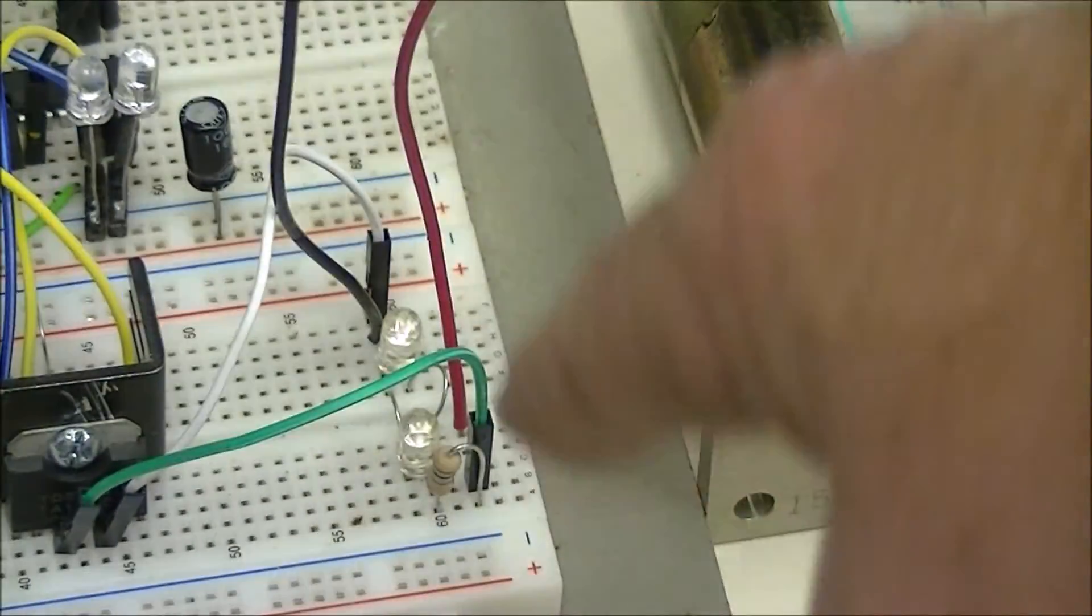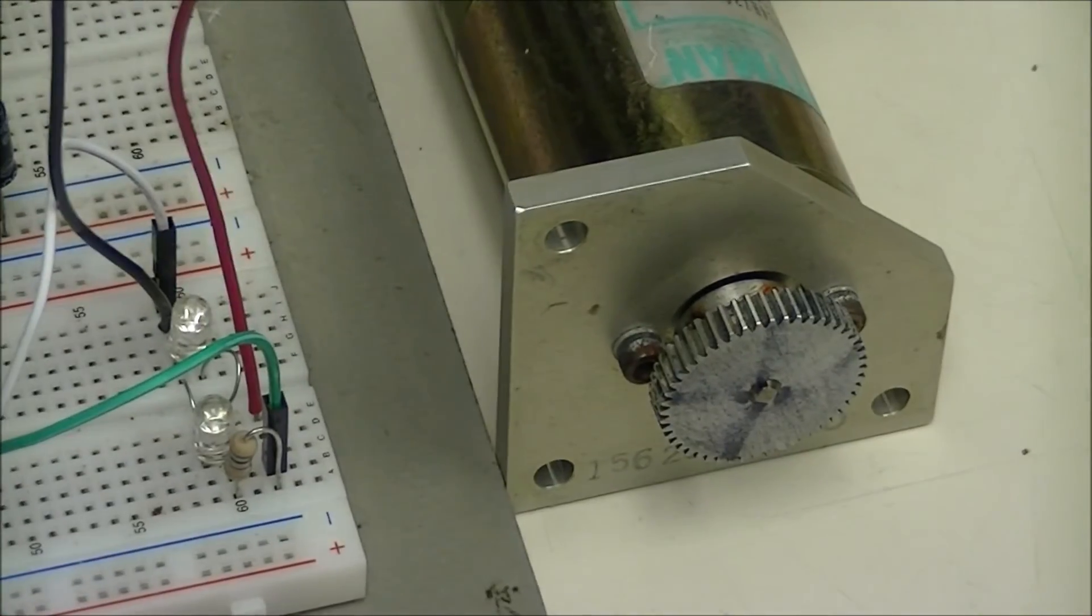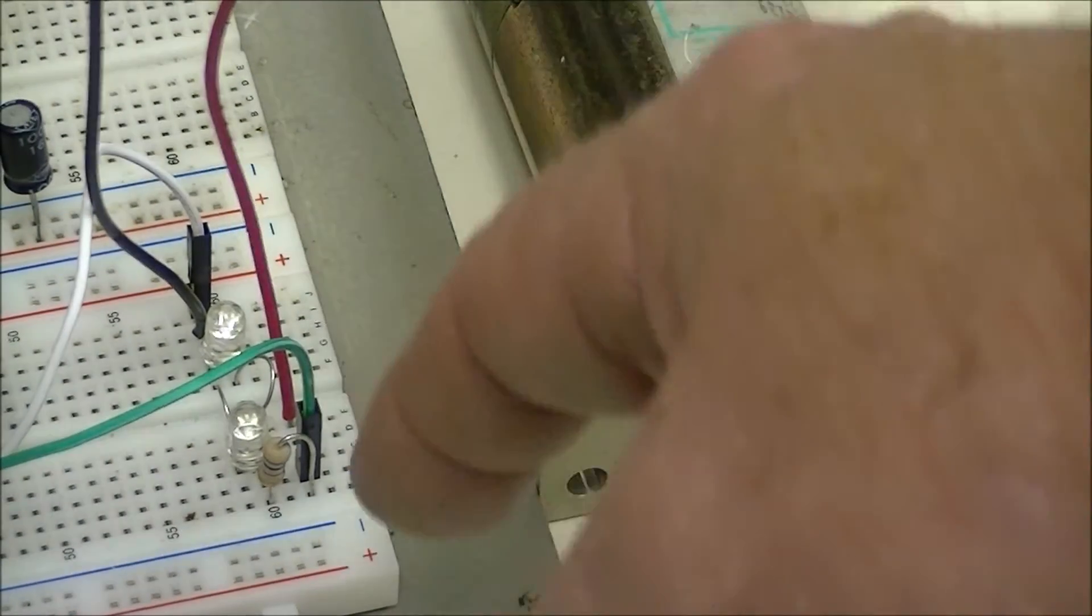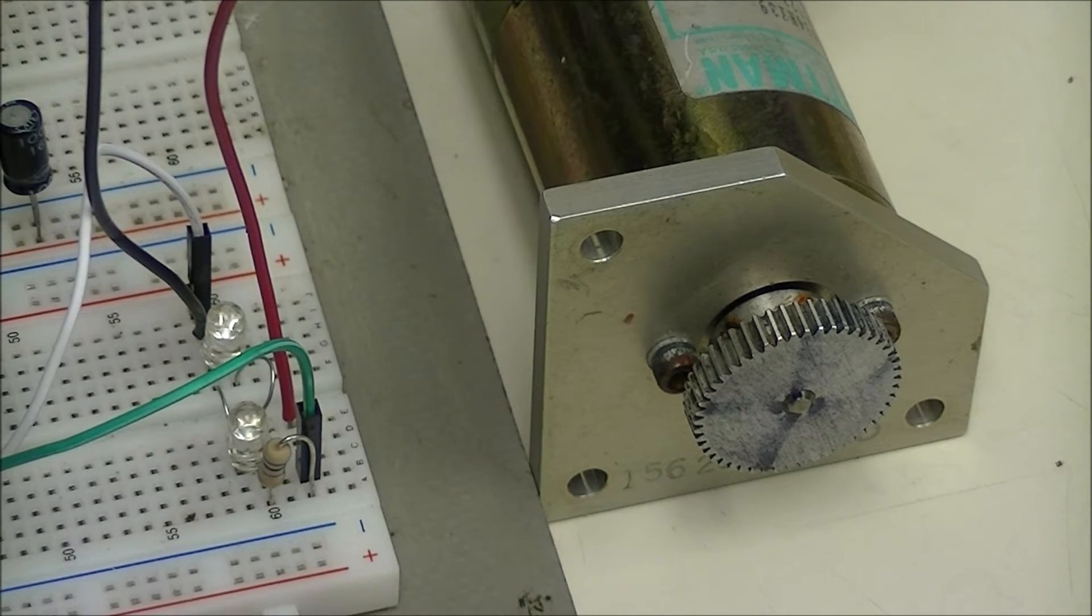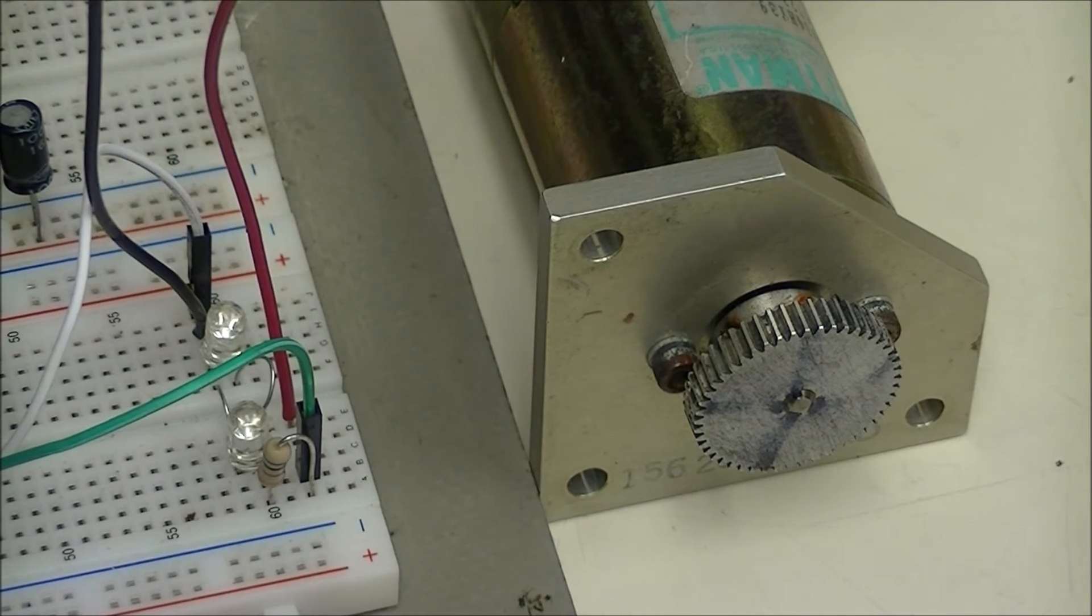There's the TA8050. Here's my polarity LEDs. I also have the current limiting circuit that I've used in other H-bridge test circuits. Let's see how it does.